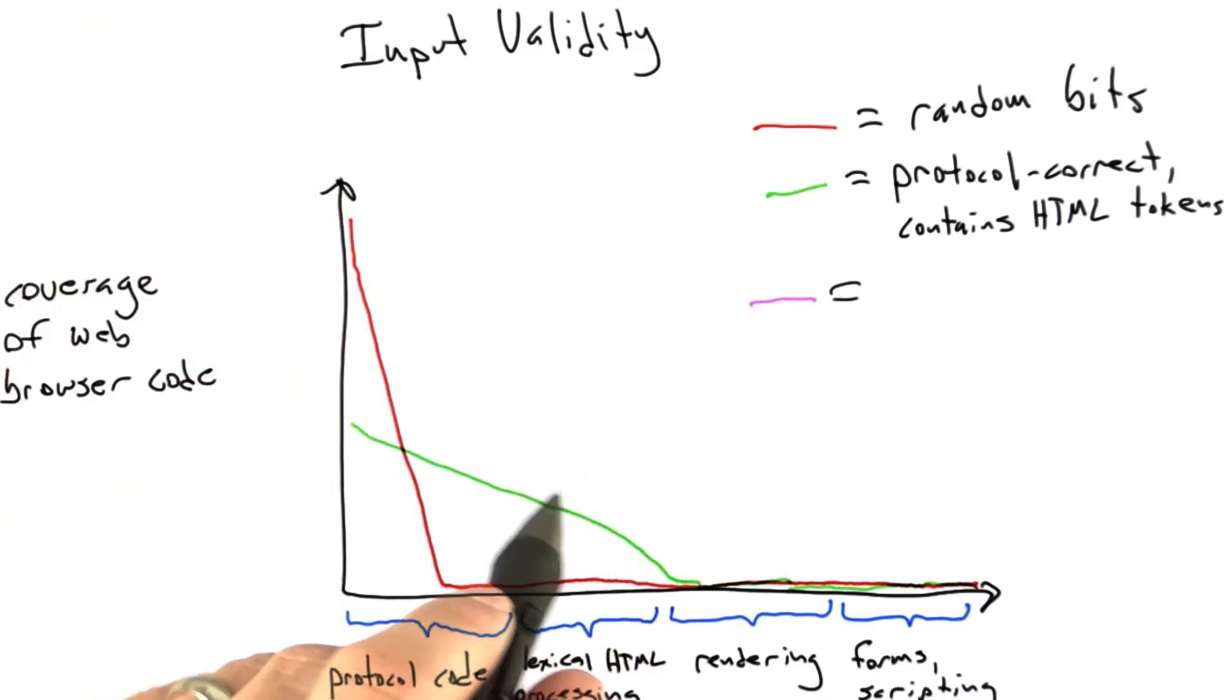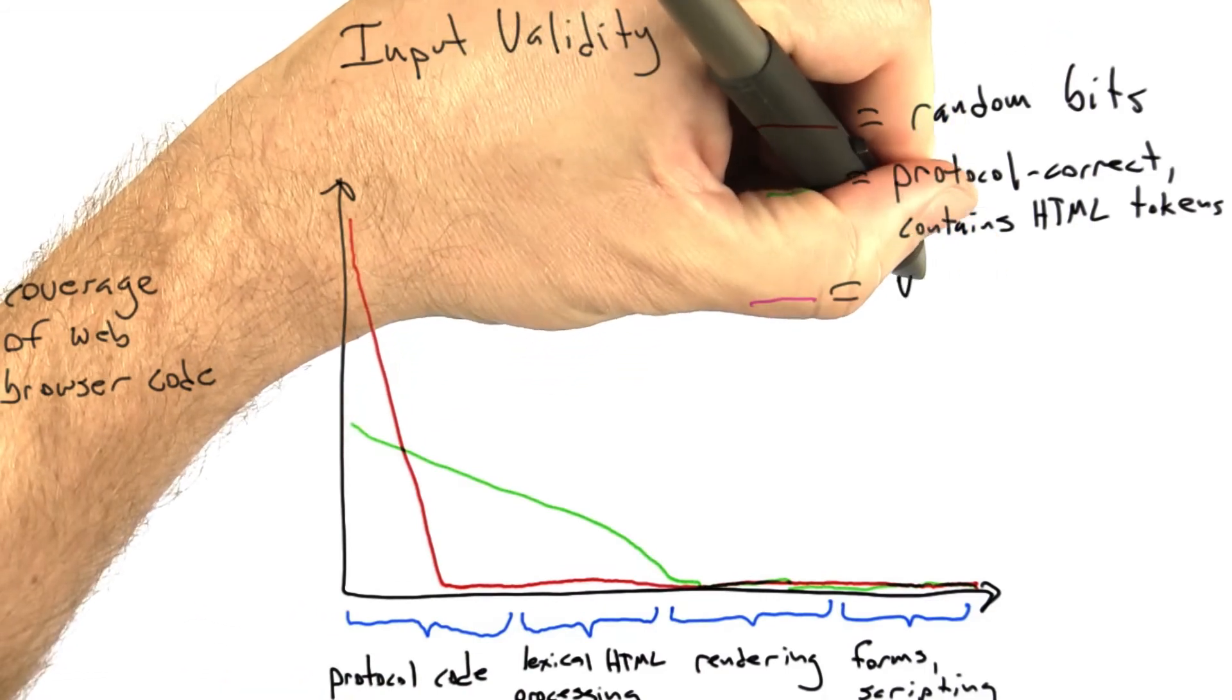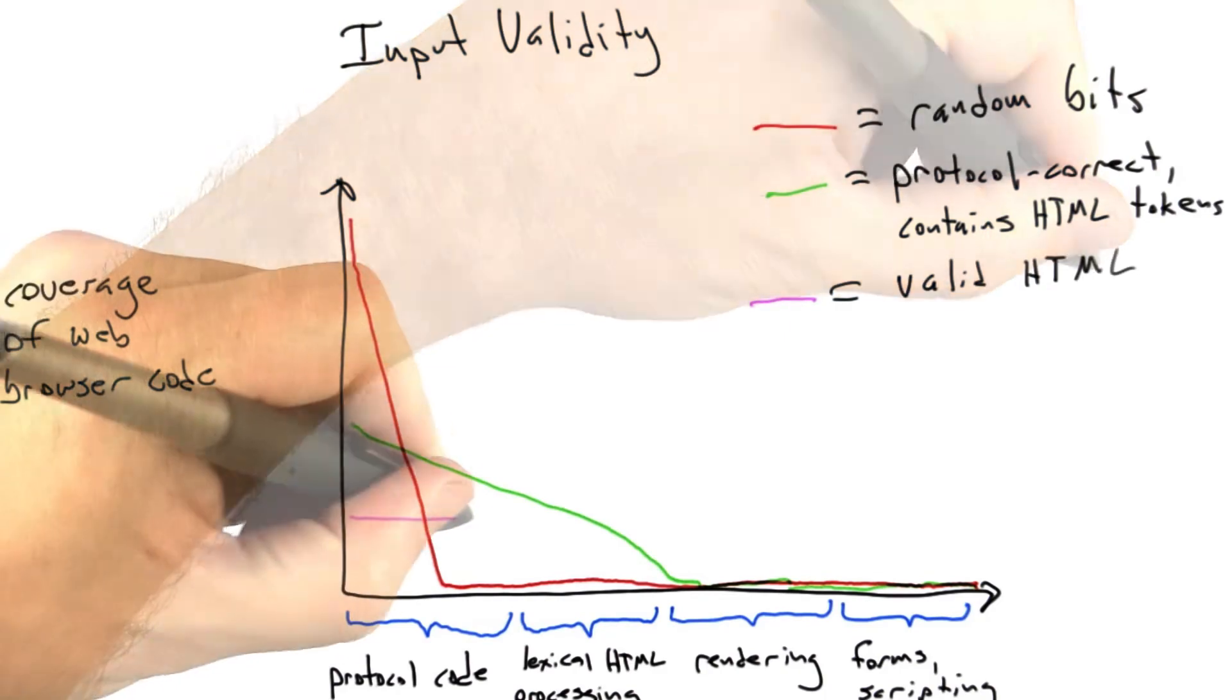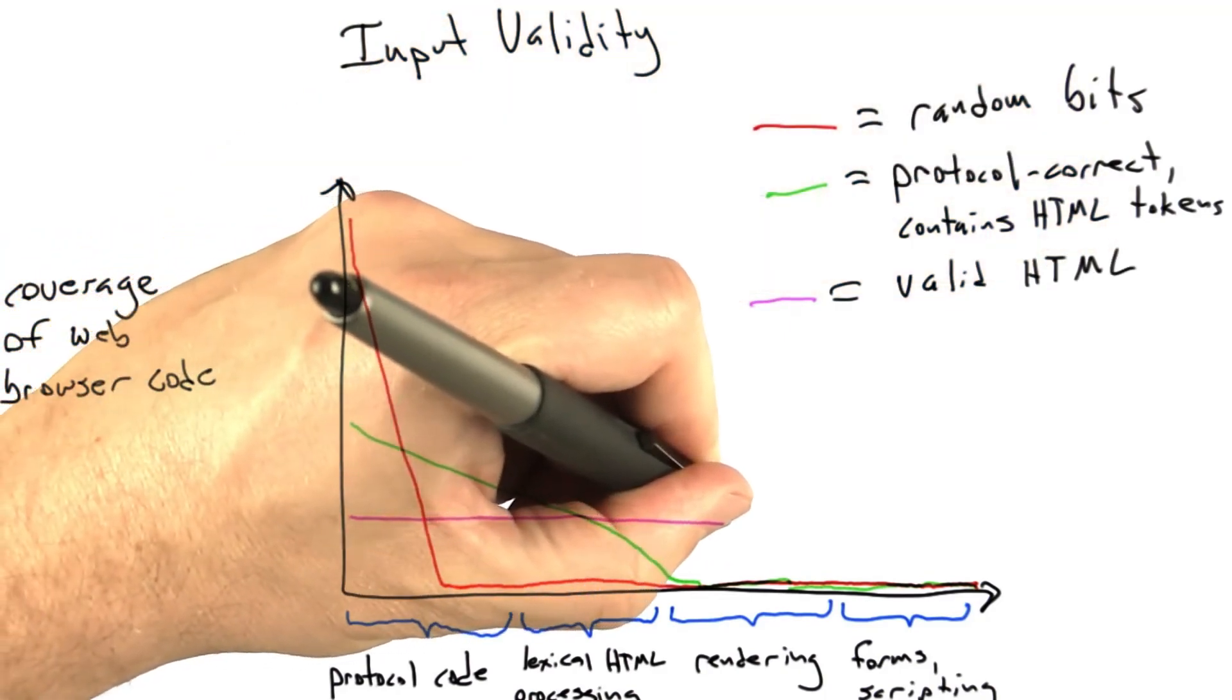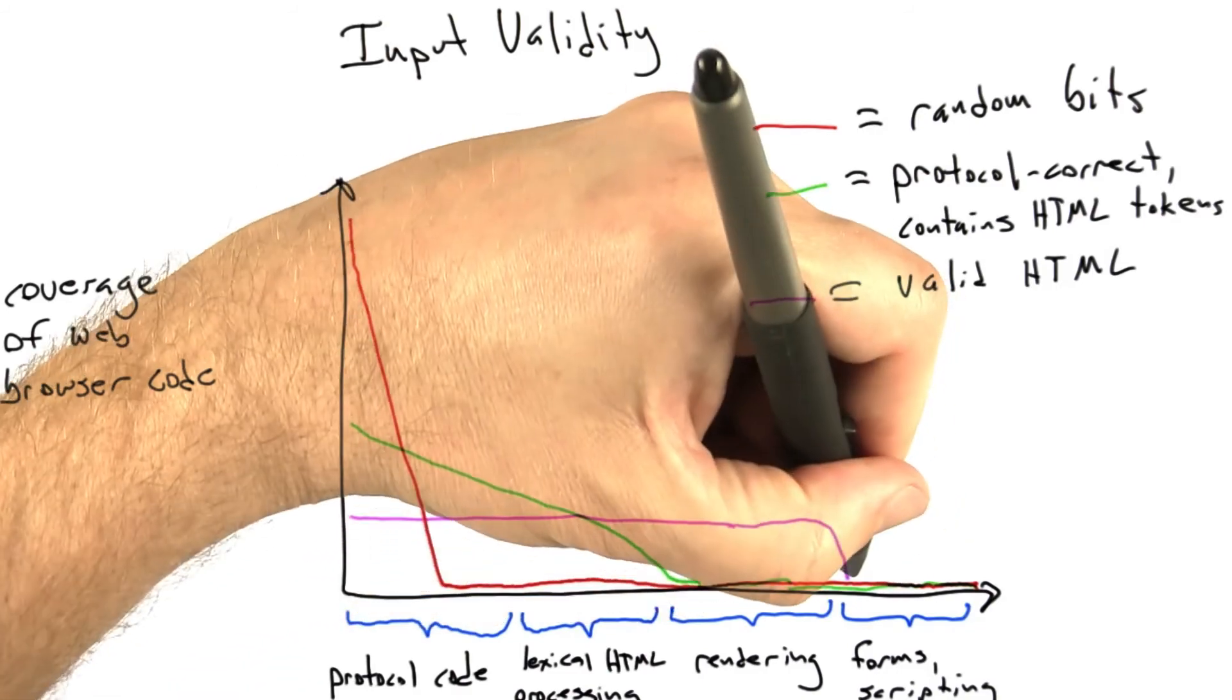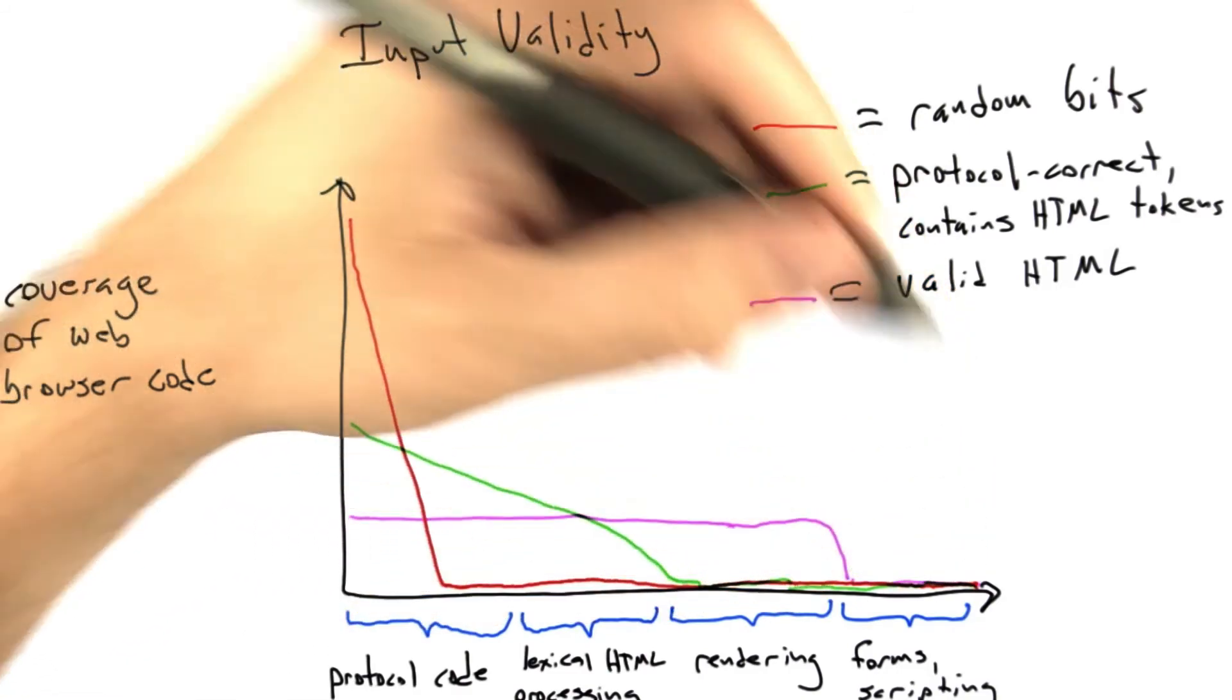So the next thing that we can do is use some sort of a grammar or some sort of a structural definition of HTML to generate random but valid HTML. So the next thing is valid HTML. And so what's going to happen now is our coverage of the protocol code and the lexor may decrease, but on the other hand, we're going to be able to push into the HTML processing code quite deeply before falling off a cliff.